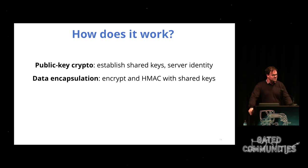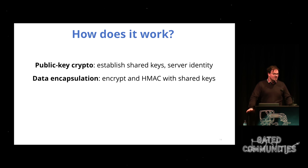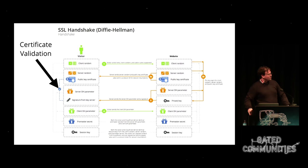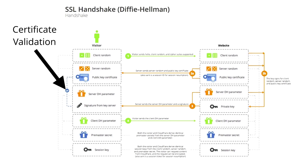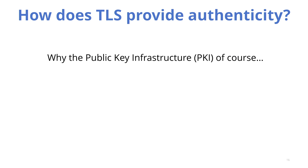It really breaks down into two different pieces. One is public key cryptography — this is how you as a browser and your server establish shared keys and the identity of the server. And data encapsulation — you want to send data to the server and back, you have to encrypt it and authenticate it. This key establishment part happens with what's called the SSL handshake, which is pretty complicated with pieces going back and forth. Let's focus first on certificate validation, which is how TLS provides authenticity — this beautiful thing we've built called the public key infrastructure.